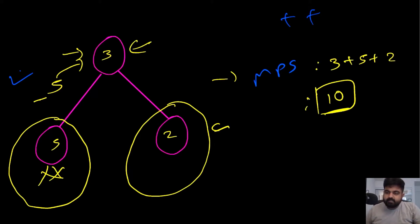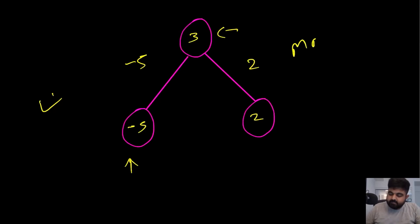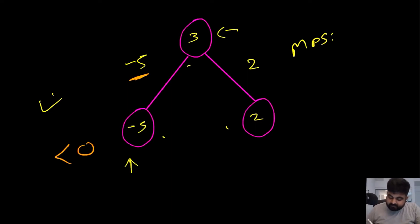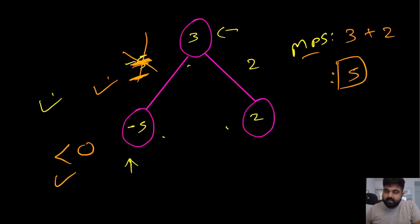Now let's consider a tree with a negative value. The left subtree offers minus 5 and the right subtree offers plus 2, with root value 3. If we naively sum everything we get 0. Instead, we check at any given moment whether the contribution is less than 0 — if so, we immediately discard it. So we discard the minus 5 and only do 3 plus 2, giving us 5. Whenever we see negative values, we ignore them because they don't add value.